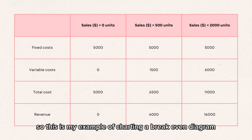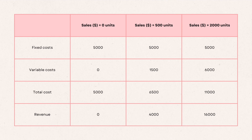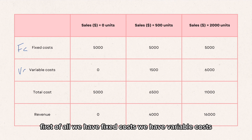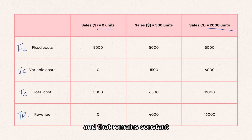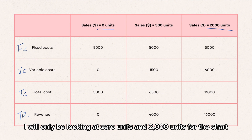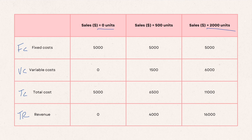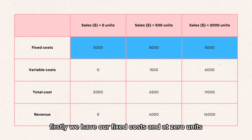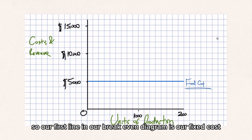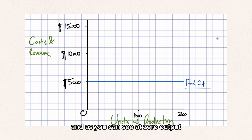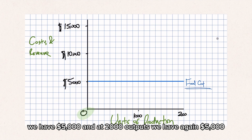Here is my example of charting a breakeven diagram. We have fixed costs, variable costs, total costs, and total revenue. Fixed costs are fixed at zero units and at 2,000 units — they remain constant. So at zero units, 500 units, and 2,000 units, they are all the same, because costs are fixed regardless of output. Our first line on the breakeven diagram is the fixed cost, which is a horizontal line — at zero output we have $5,000, and at 2,000 output we again have $5,000.